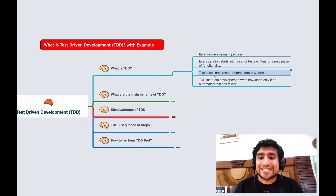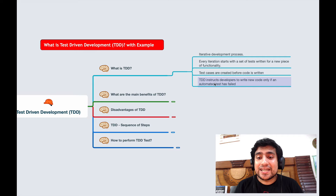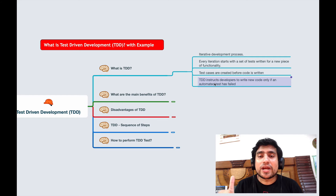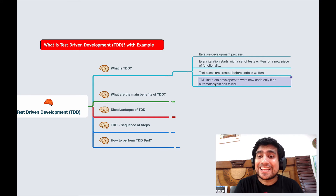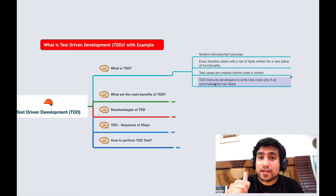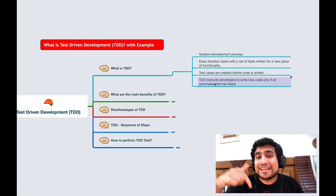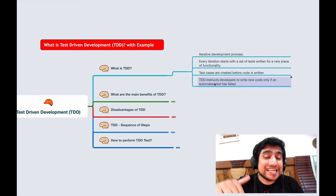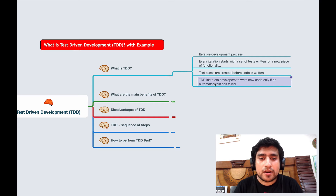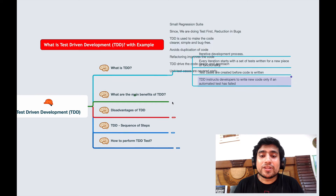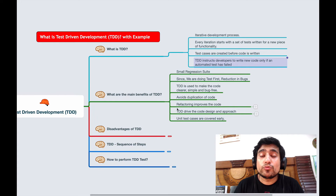Test cases are created before the code is written, and TDD instructs the developers to write new code only if the automated test that we are running has failed. We'll see this more clearly in the demo part. Before that, let's jump into what is the main advantage of TDD.